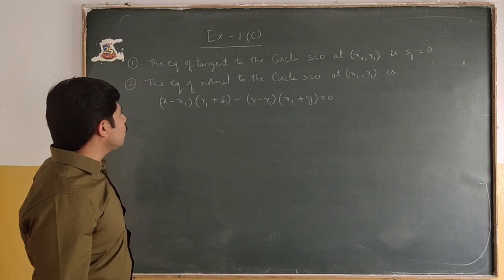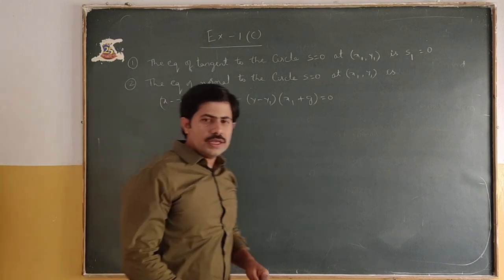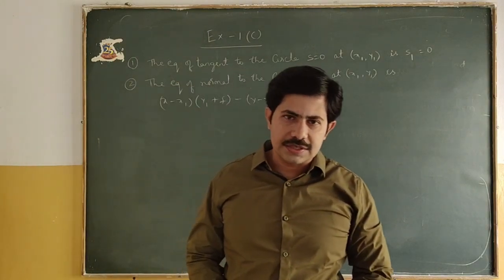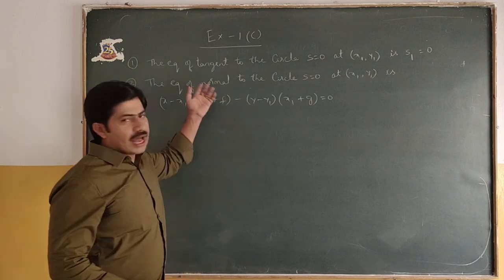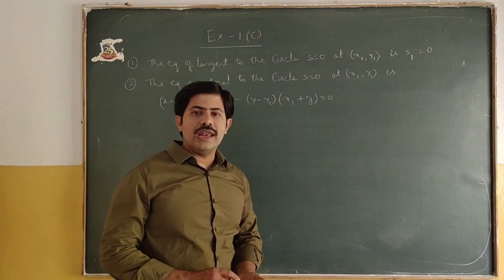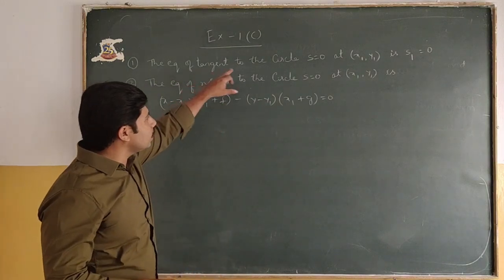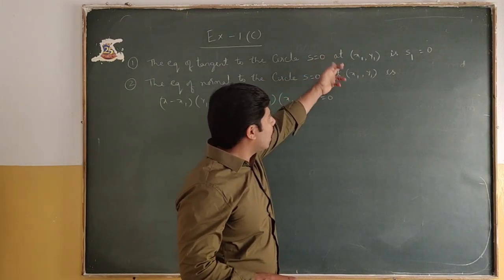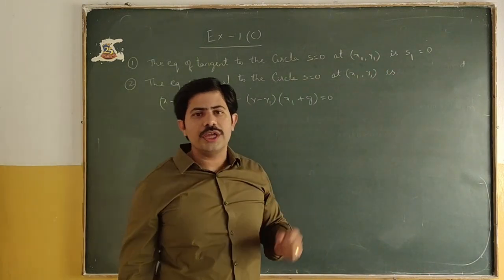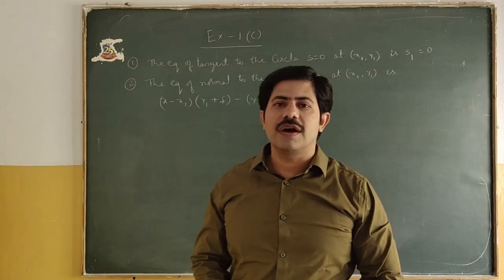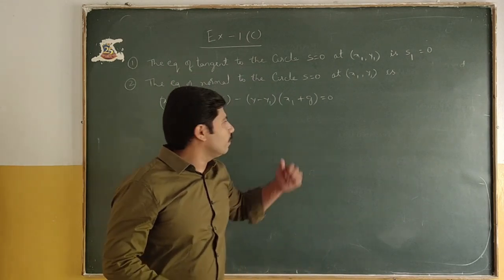The first one is the equation of tangent to the circle S=0 at (x1, y1) is S1=0. In the last class, we had problems on length of tangent, that is √S1. Now, equation of tangent. The notation S1 is: xx1 + yy1 + g(x + x1) + f(y + y1) + c = 0. That is the equation of tangent.